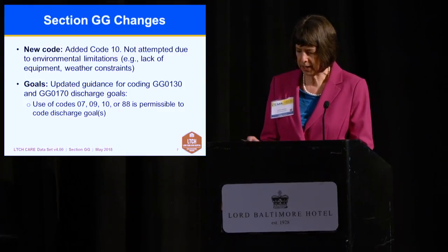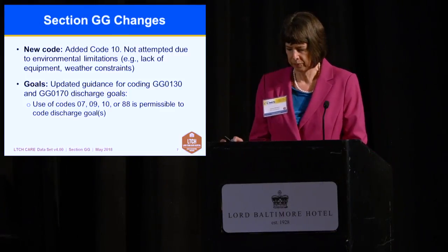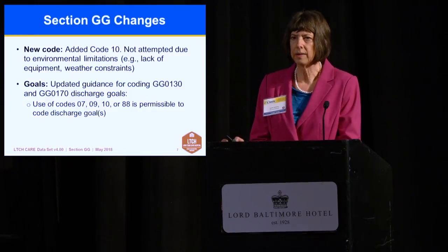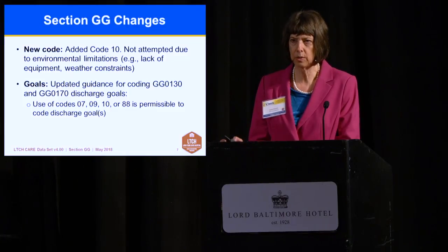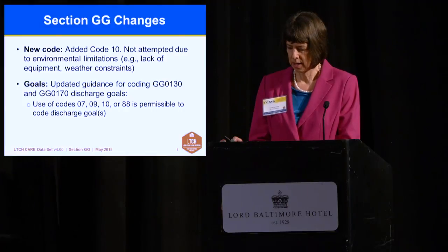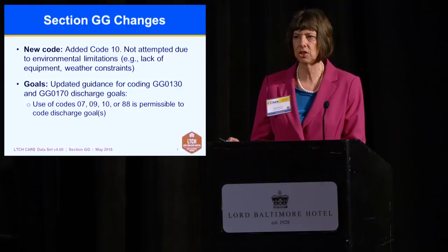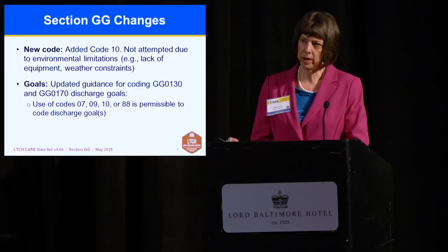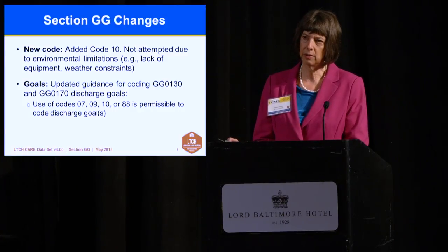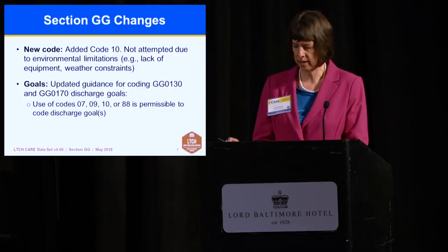We've also updated guidance for coding sections GG0130 and 0170 discharge goals. In the 2018 Version 4, you are now able to use 'not attempted' codes — 07, 09, 10, and 88 — as discharge goals. You still only need to use a minimum of one discharge goal in either self-care or mobility, but clinicians can now add a reason why they may not have a discharge goal for a particular patient.